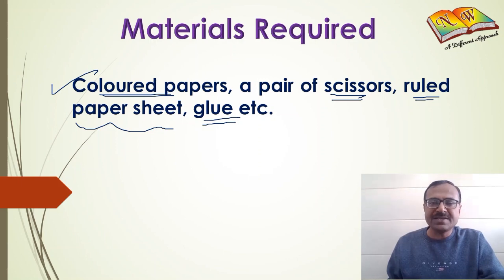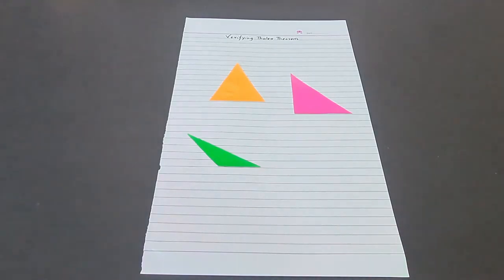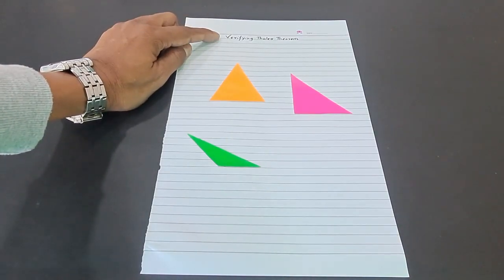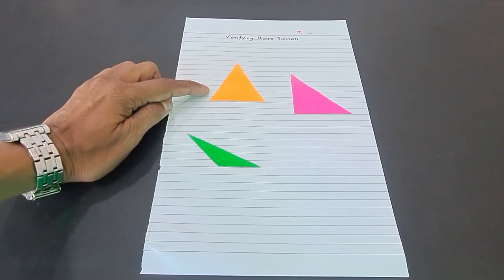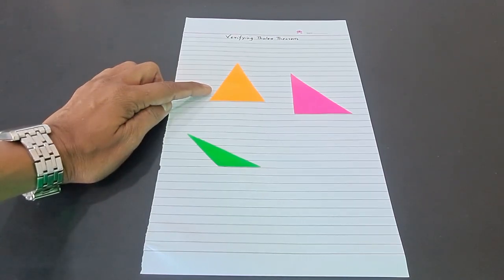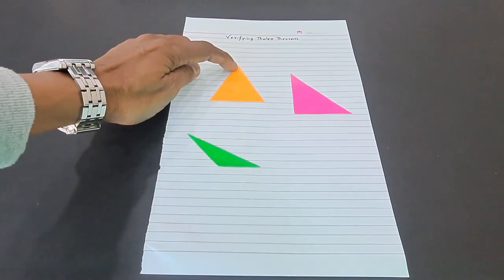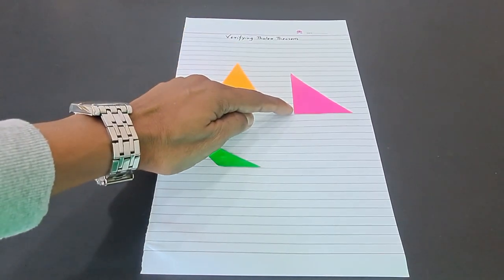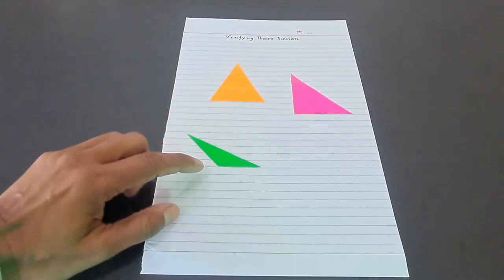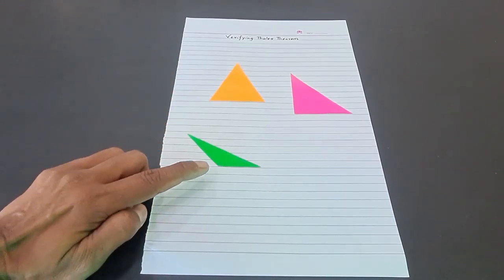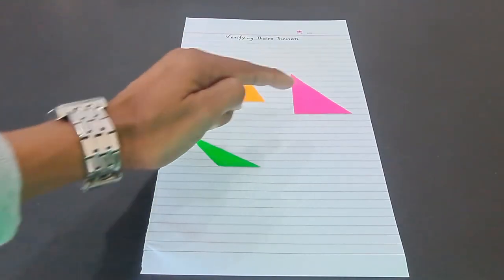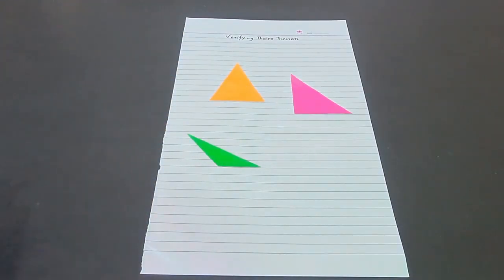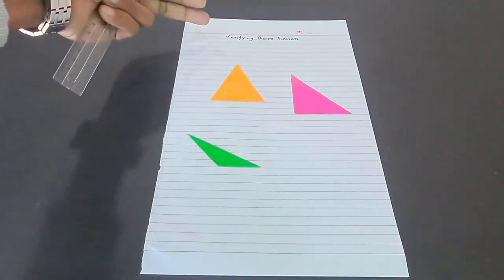To verify the Thales Theorem we have taken three different triangles: an acute angle triangle where all three angles are acute, a right angle triangle with one 90-degree angle, and an obtuse angle triangle. We will verify the theorem for all three types using a ruled sheet where the lines are already parallel, making it easier to draw parallel lines.